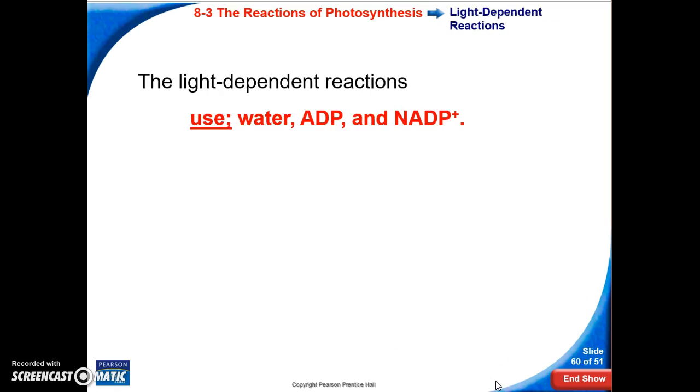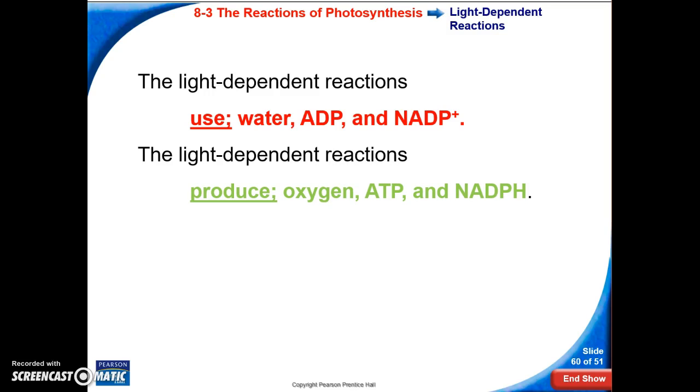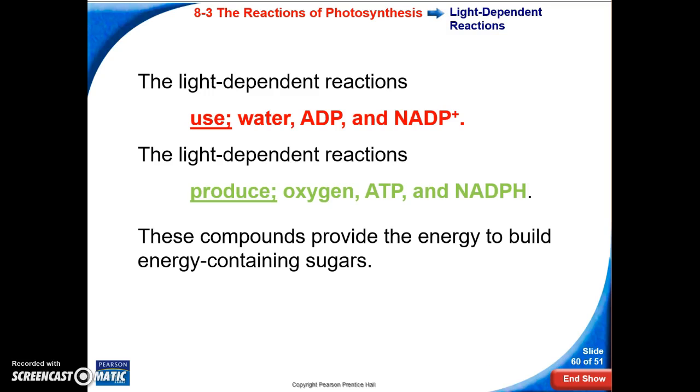In summary, the light-dependent reactions use water, ADP, NADP+, and light, and what they produce is oxygen, ATP, and NADPH. These compounds provide the energy to build energy-containing sugars in the next part of photosynthesis.